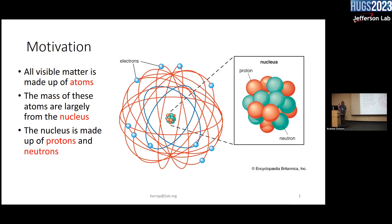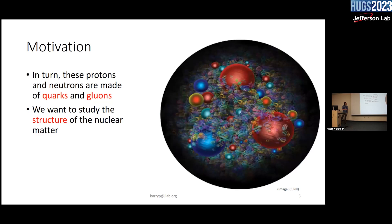Here's some motivation, bringing us back to the big picture. This is a QCD summer school, so let's talk about where that all comes from. All visible matter is made up of atoms, which we learned in high school, and we know that the mass is largely in the nucleus, which in turn is made up of protons and neutrons.